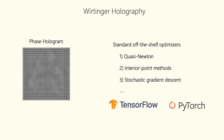The machine learning libraries will compute Wirtinger gradients for you, and you can use various off-the-shelf optimizers such as Adam, Stochastic Gradient Descent, and so on. Different optimizers might result in slightly different solutions, but any first-order optimization that utilizes Wirtinger gradients falls under the umbrella of Wirtinger holography.